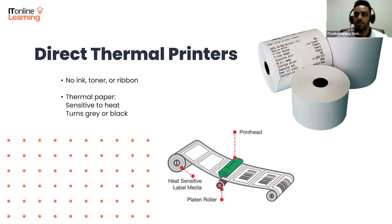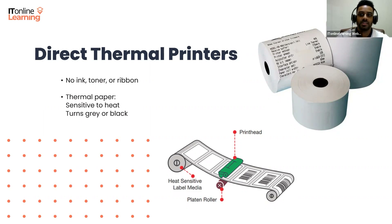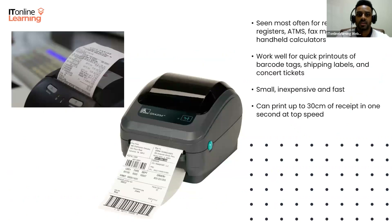Direct thermal printing doesn't use ink, toner, or a ribbon, but prints directly on special paper. This special paper, called thermal paper, has a thermochromic coating that makes it sensitive to heat. While it might look like the pins burn images into the thermal paper, it's actually the thermal coating that simply darkens to gray or black whenever it's touched by hot pins. We see this solution most often used for receipts in cash registers, ATMs, fax machines, and even handheld calculators.